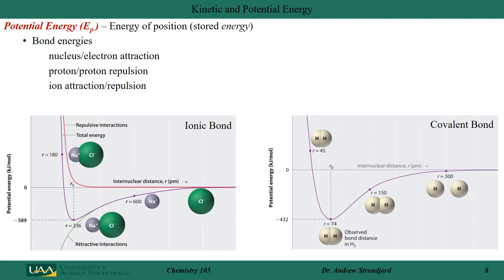When we think of potential energy, we call it capital E sub P. From a chemical standpoint, it's the energy of position or stored energy. Chemical compounds store energy typically in their bonds — through electrostatic attractions and repulsions. The nucleus, which is positive, is attracted to the electrons, and protons repel each other — both forms of potential energy.